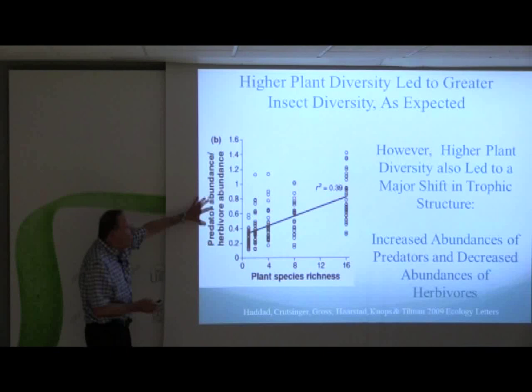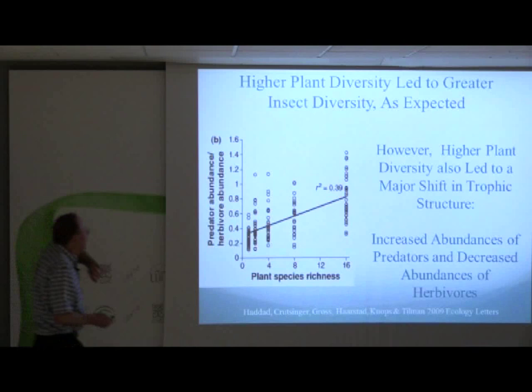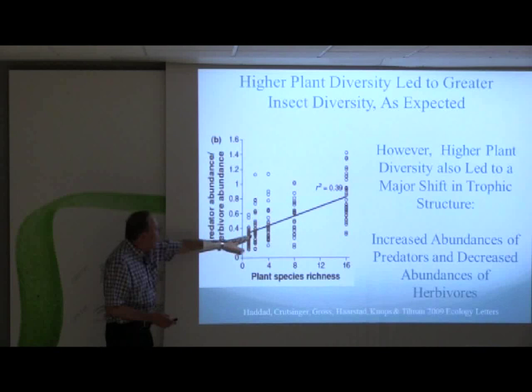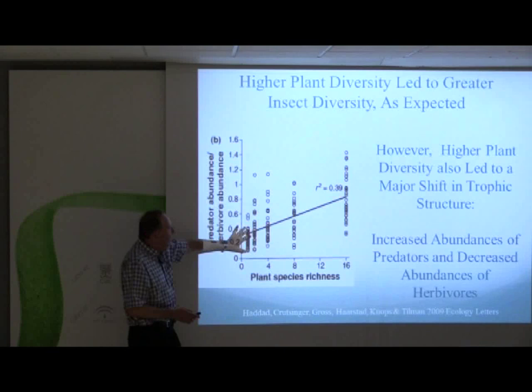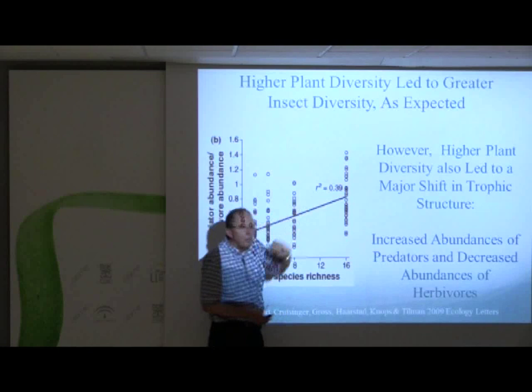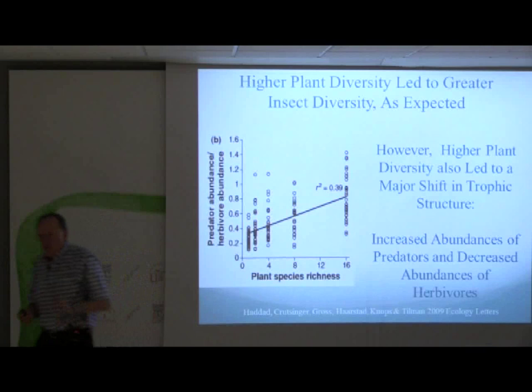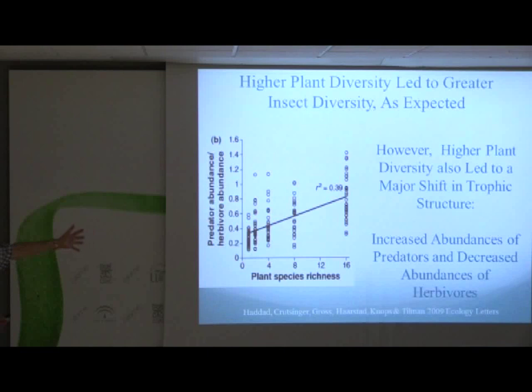We didn't start out to look at the whole food chain, but we happen to have colleagues who really knew the insects, so we know what is happening to the abundance of all the insects — over a thousand different species found in our plots. This is the ratio of predators and parasitoids divided by the number of herbivores. In low-diversity plots, this ratio is low, meaning they are dominated by herbivorous insects. As you go toward higher and higher diversity, the herbivores become less abundant and the predators and parasitoids more abundant. So why are diverse plots more productive? Less disease, more resource use, but also a top-down effect of predators and parasitoids keeping herbivorous insects at low abundance. We don't know exactly why plant diversity affects this ratio of predators to herbivores, but it does — a very interesting food chain effect.